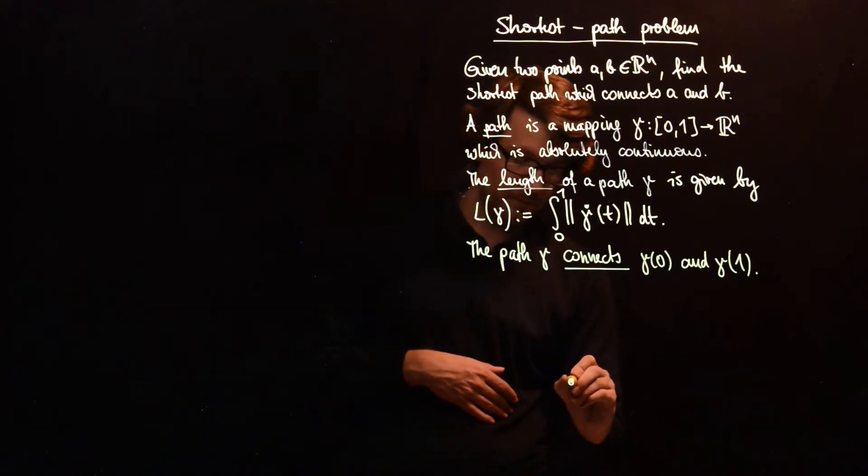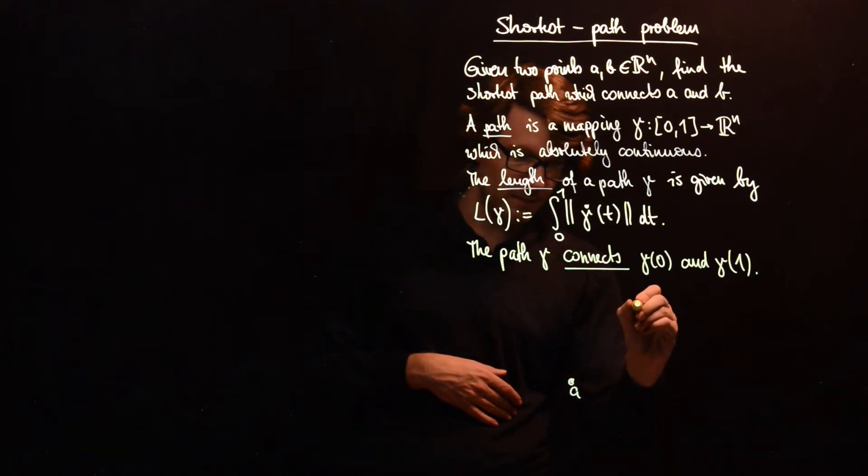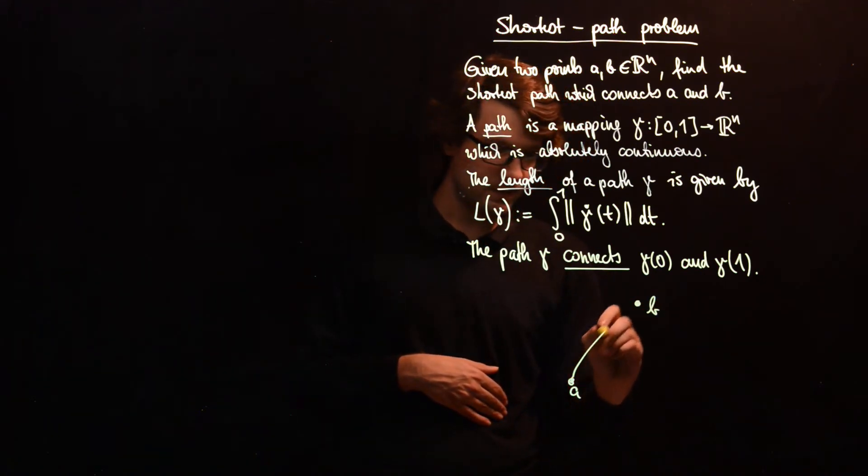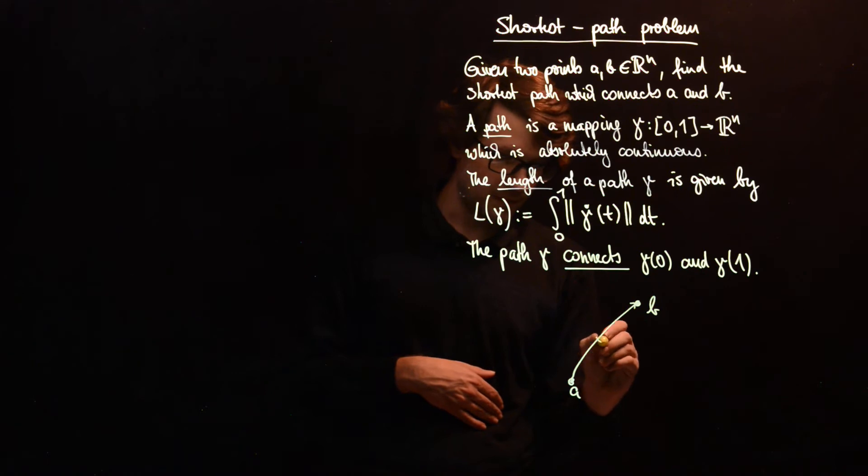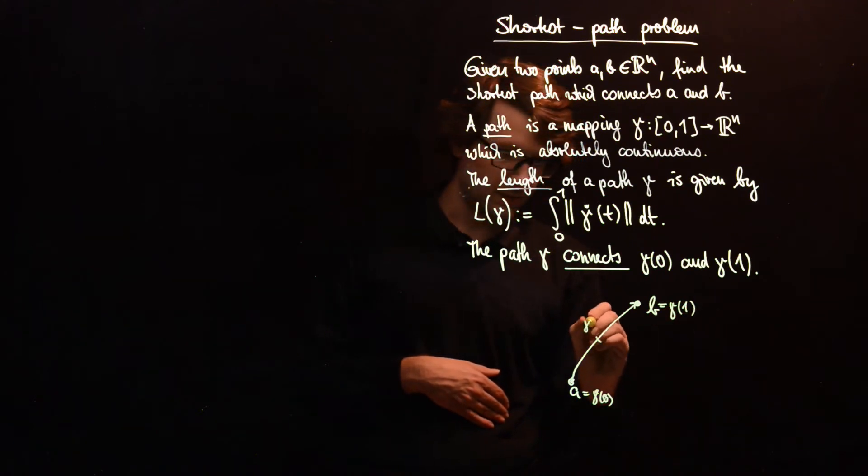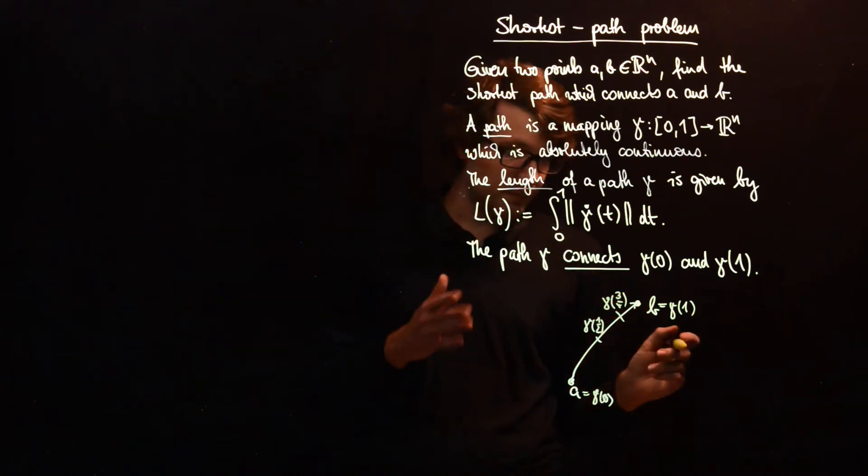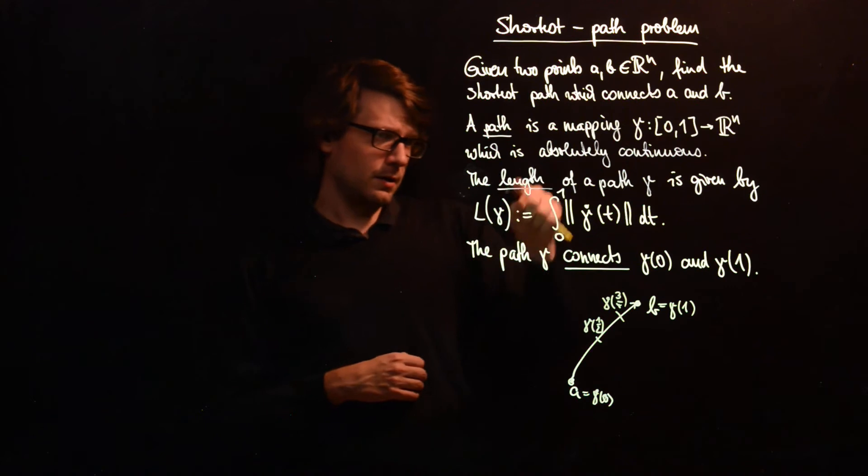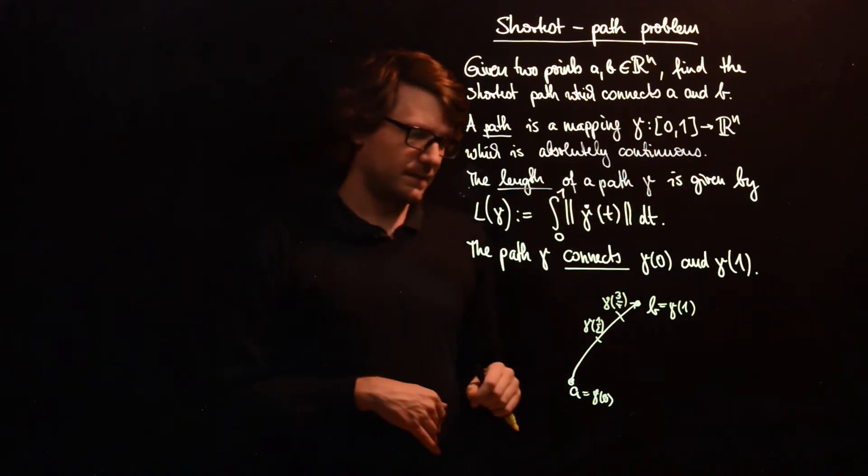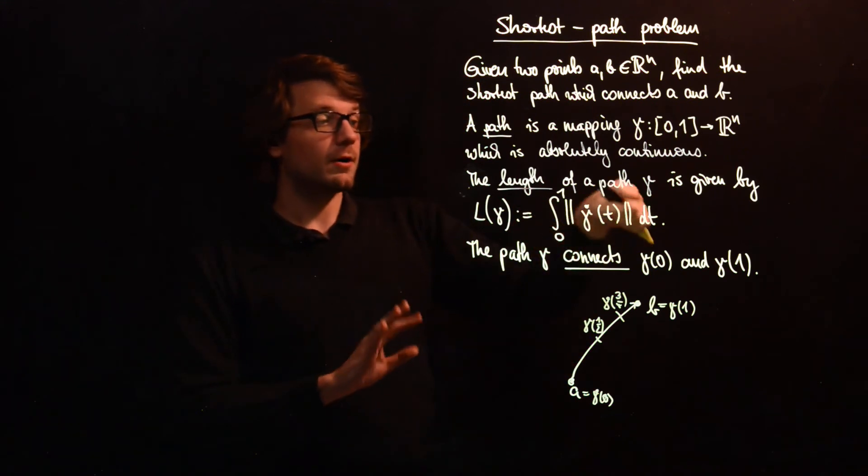What does this look like? So you have some points A and B, and then you have certain parts in between them, so then you have gamma of 0 here, gamma of 1 here, you have gamma of 1 half for example, gamma of 3 quarter, and so on.